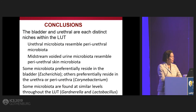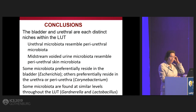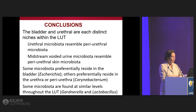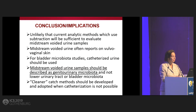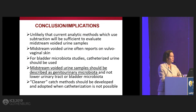We conclude that the bladder and the urethra are each distinct niches within the lower urinary tract. The urethral microbiota resembles the periurethral microbiota, and the midstream voided urine resembles the periurethral skin. Some microbiota prefer to reside in the bladder, like E. coli. Others prefer the urethra or periurethra, like corynebacterium. Some are found in similar levels regardless of niche, such as lactobacillus and Gardnerella. Techniques to bioinformatically subtract urethra or a periurethral swab from a voided specimen will not likely give us the true picture of the bladder.